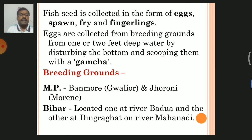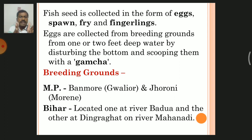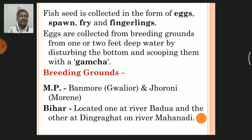Fish seed is collected in the form of eggs, spawn, fry, and fingerlings. Eggs are collected from breeding grounds from one to five feet deep water by disturbing the bottom and scooping them with a jar.